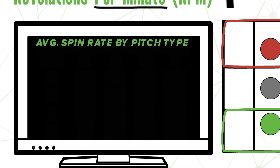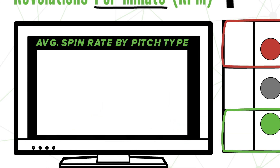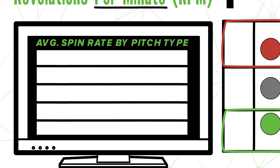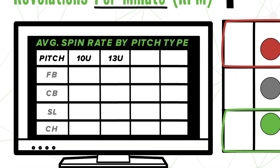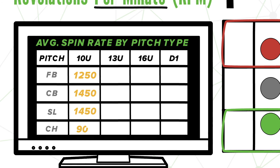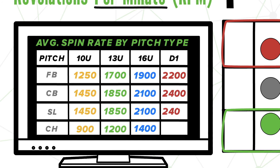Here's a chart that gives you some average spin rates by pitch type for a range of different age groups — see where you stand. If you're above average for your age group, pitch up in the zone, because that will best fool hitters to swing underneath your pitches.